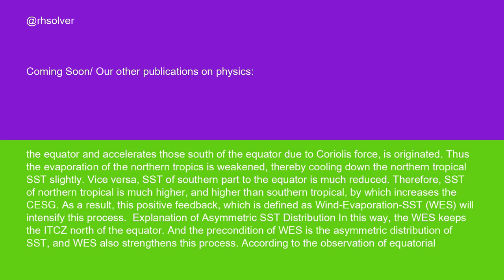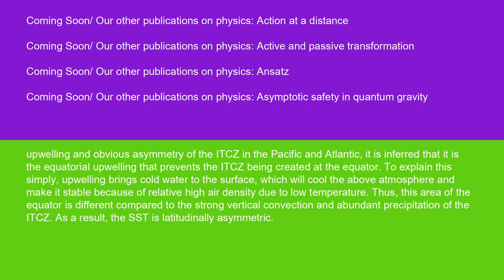According to observation of equatorial upwelling and the obvious asymmetry of the ITCZ in the Pacific and Atlantic, it is inferred that equatorial upwelling prevents the ITCZ from forming at the equator. Upwelling brings cold water to the surface, which cools the atmosphere above and makes it stable due to relatively high air density from low temperature. Thus, this equatorial area differs from the strong vertical convection and abundant precipitation of the ITCZ, and as a result, the SST is latitudinally asymmetric.